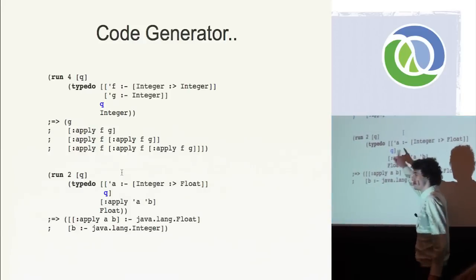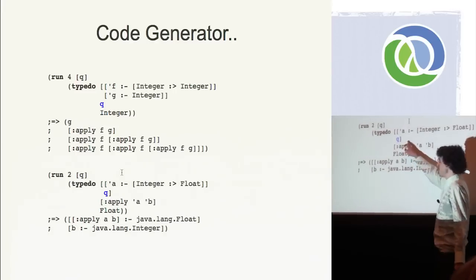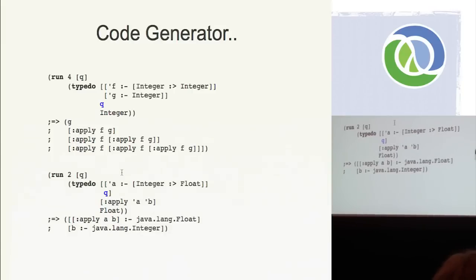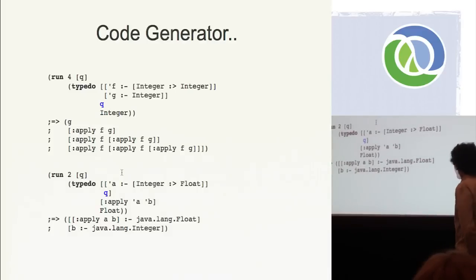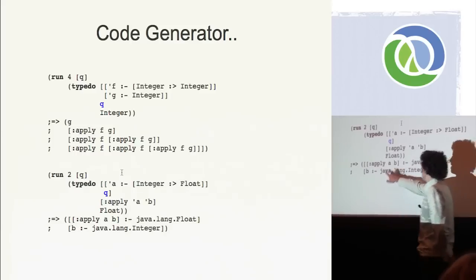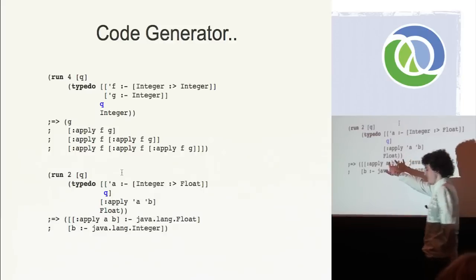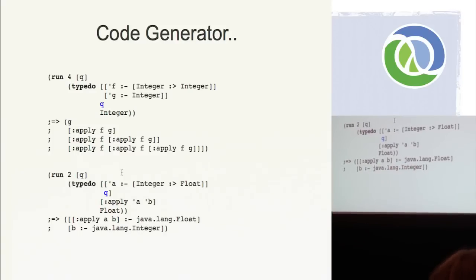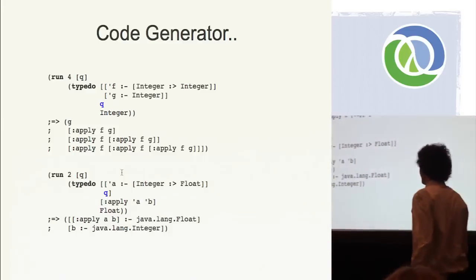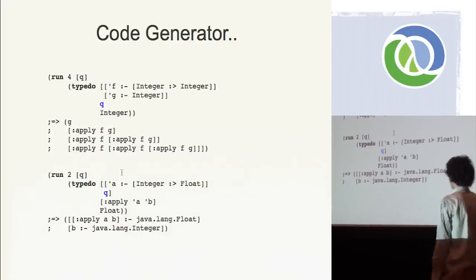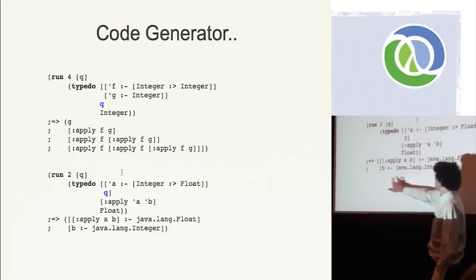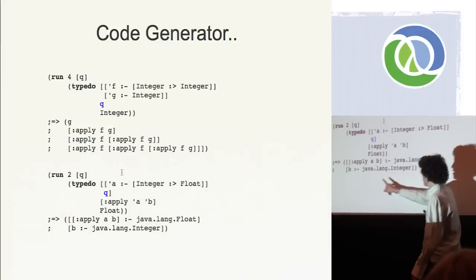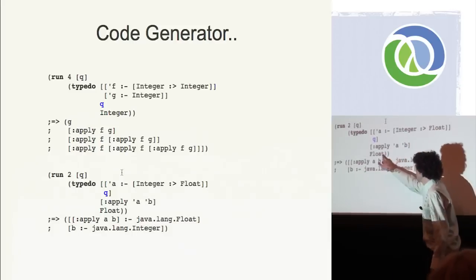There's one more place I can put this logic variable. I can say: how can I extend the current environment such that applying A to B is of type float? This is probably the only bug that has brought a smile to my face — it's a pretty cheeky bug. Clearly what's happening is that our type inference doesn't really understand our syntax very well. It's basically saying: if you want the expression AB to equal float, just put an environment entry where the expression AB is equal to float. We also get an actual legitimate result: B is of type integer, A is of type integer-to-float — if B is an integer and goes into A, we get back our float.